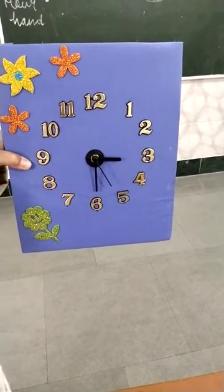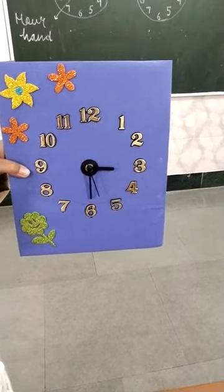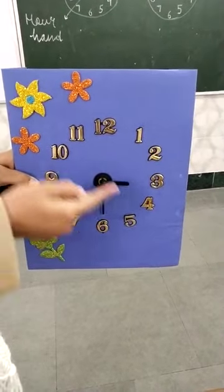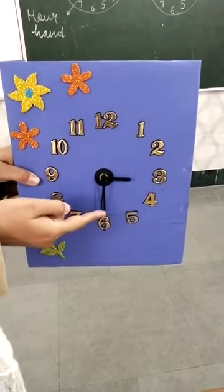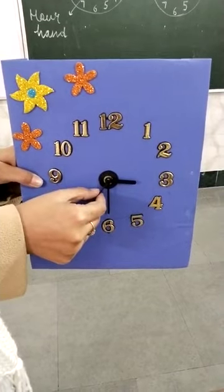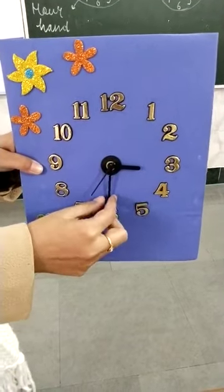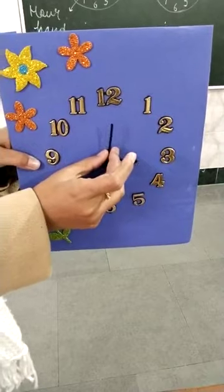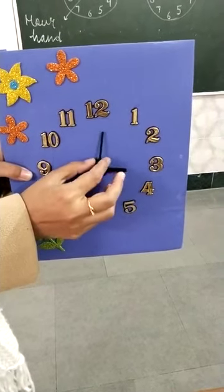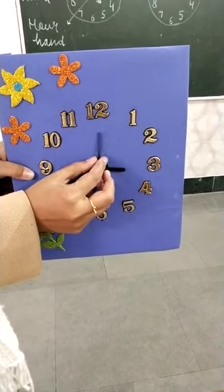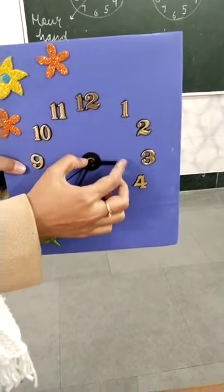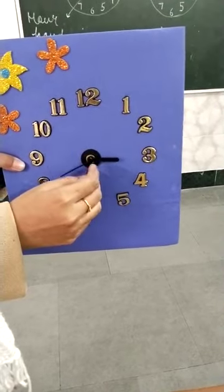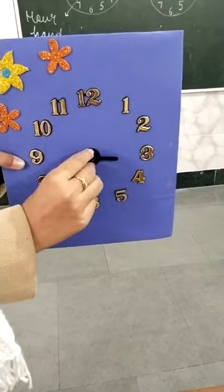We are going to cover only two hands, that is the minute hand and the hour hand — not the second hand. The second hand is constantly moving, so you will ignore it. The longest hand is called the minute hand and the shortest one is called the hour hand.